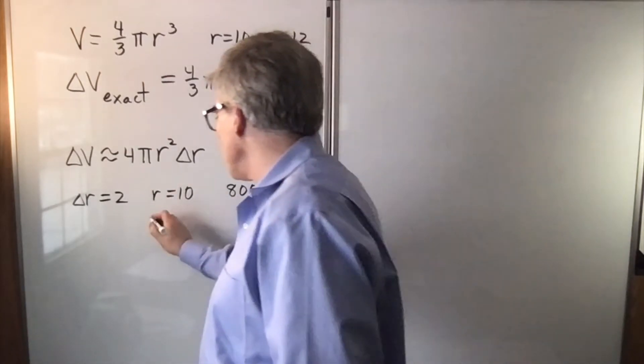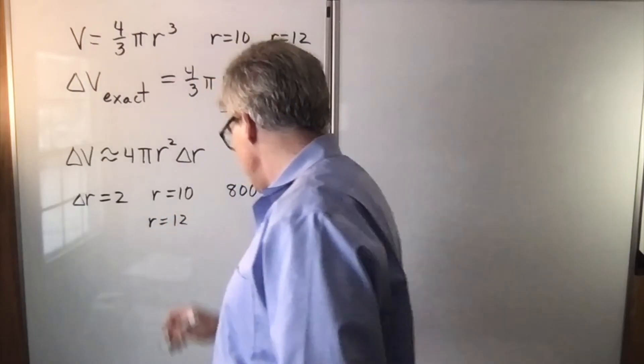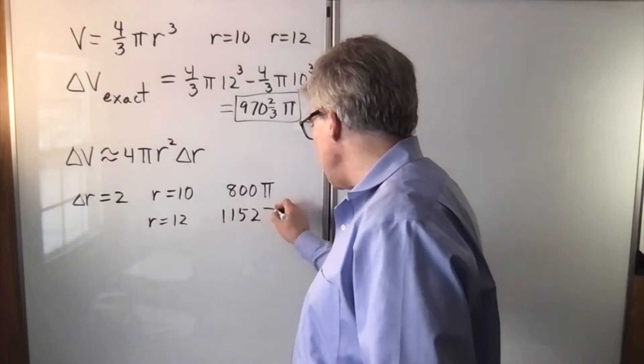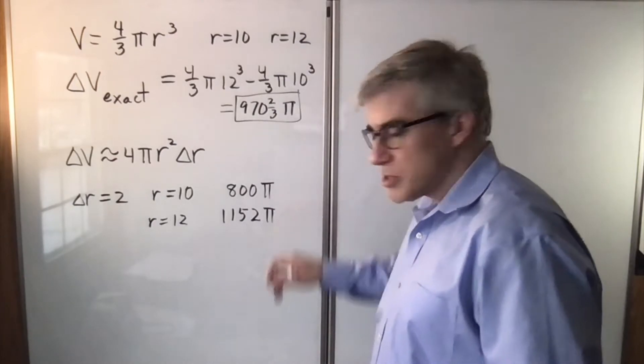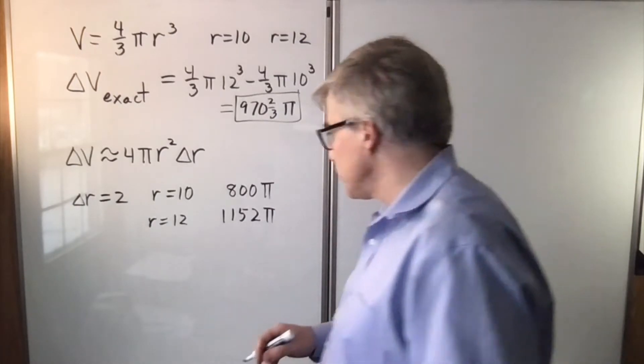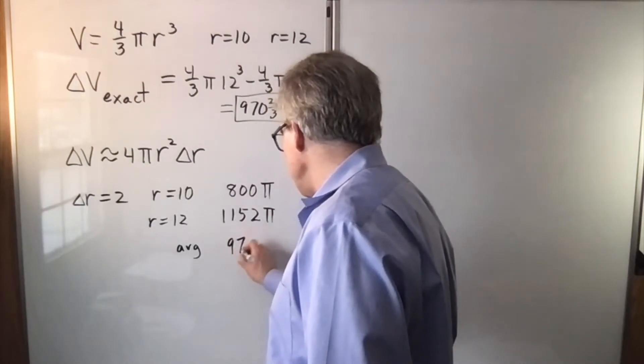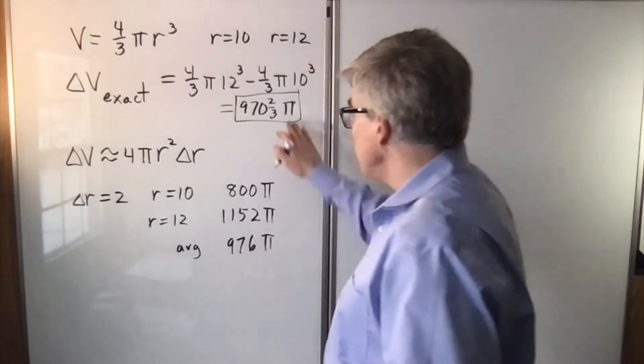We could instead work it out with r equals 12. In that case, we get 1152 pi. Now, this one's too low, this one's too high. We could try averaging them. The average of 800 and 1152 is 976 pi. Pretty decent.